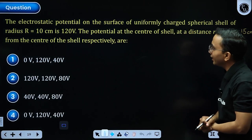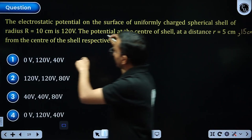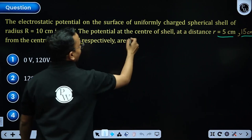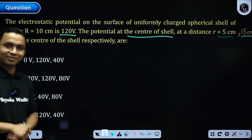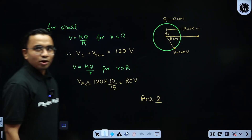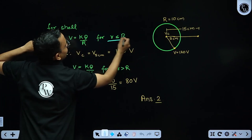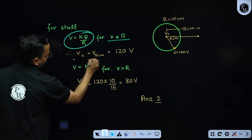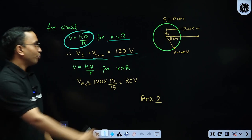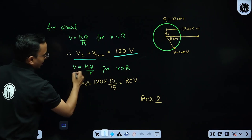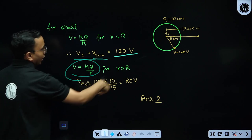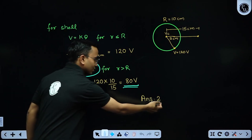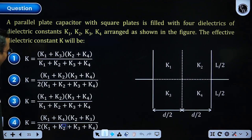Next question: the electrostatic potential on the surface of a shell of radius 10 cm is given as 120 V. Find the potential at 5 cm, 15 cm, and at the center. For r < R, the potential equals kq/R (same as the surface), so both the center and the 5 cm point are at 120 V. For r > R, V = kq/r, giving 80 V at 15 cm. The answer is option 2: 120, 120, and 80 V.